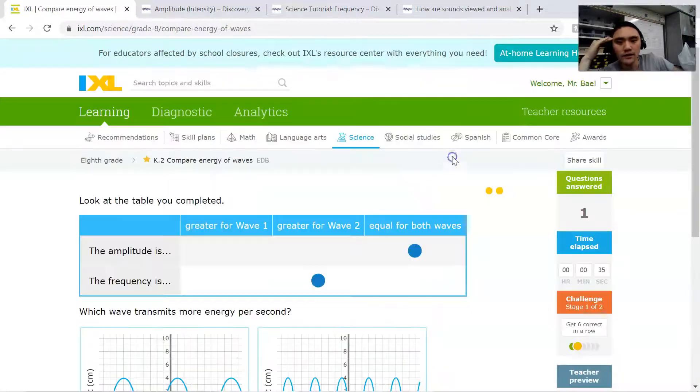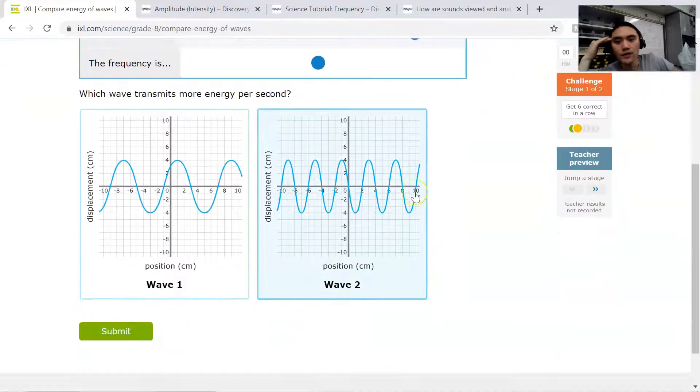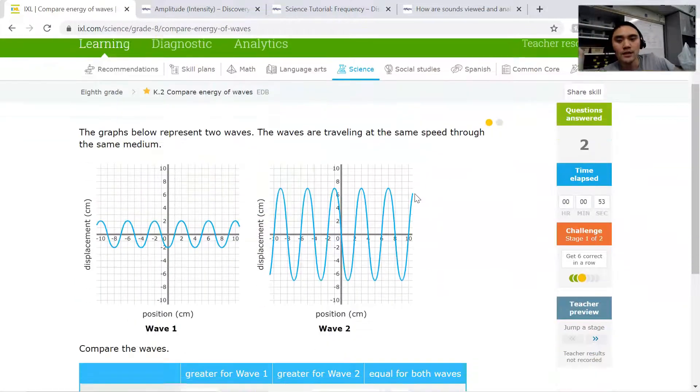Oh wait, there's another thing I have to answer? Which one transmits more energy per second? So energy per second basically refers to the frequency. So if something has more frequency, it's going to have more energy. Also, if it is louder, it will also have more energy. So I'd pick wave two. All right. Next one here.